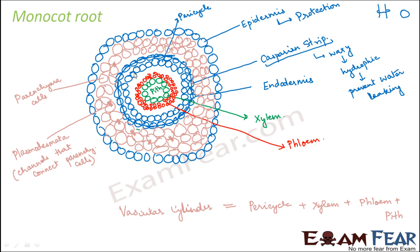So the vascular cylinder consists of the blue pericycle layer, plus the green xylem, plus the red phloem, plus the pith — everything that is inside the endodermis is termed the vascular cylinder, because the majority of this cylinder is composed of vascular tissues. It is called a cylinder because it has a cylindrical form; we cannot appreciate that fully in the cross-section view.